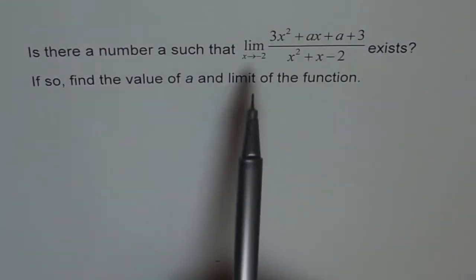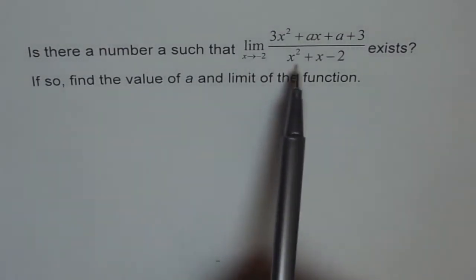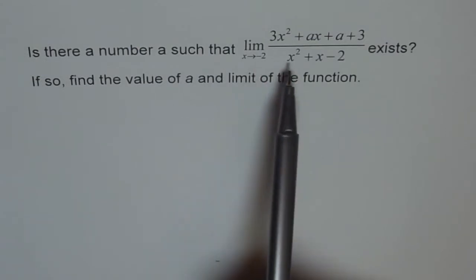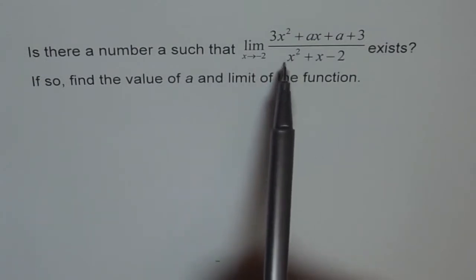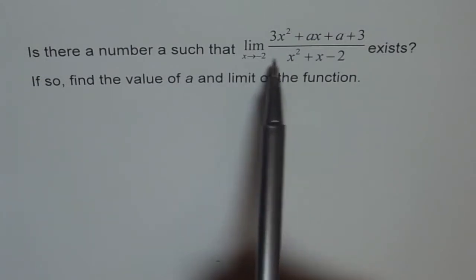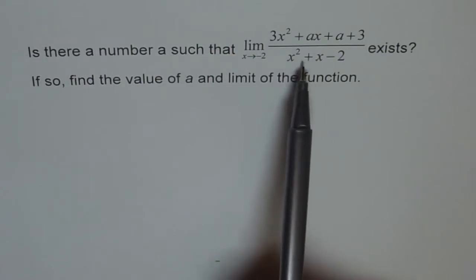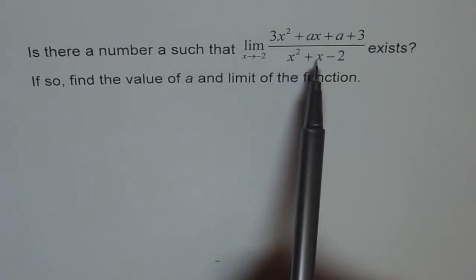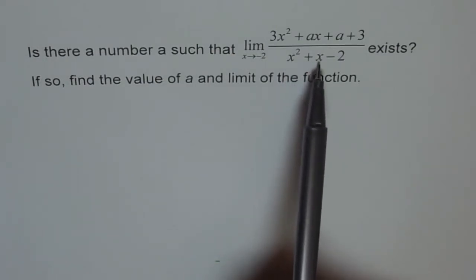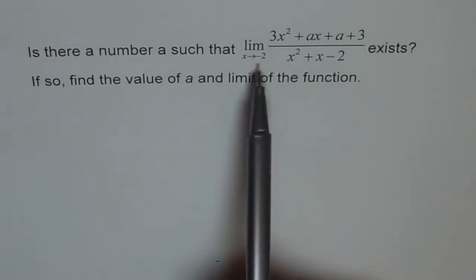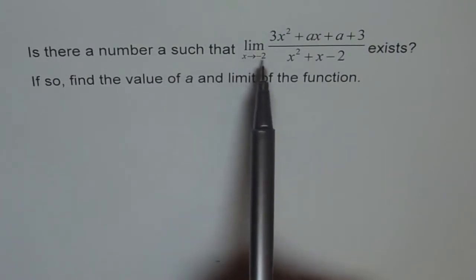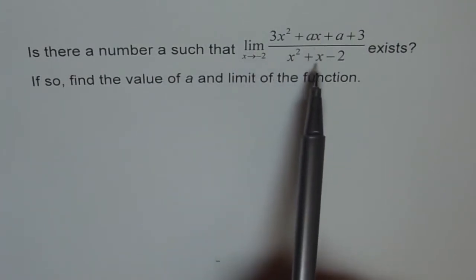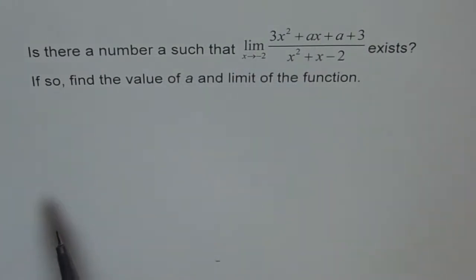If I plug in minus 2 in the denominator, what do I get? Minus 2 squared is 4, and 4 minus 2 is 2, and 2 minus 2 is 0. So if I plug in x equals minus 2 in my function, the denominator is 0.